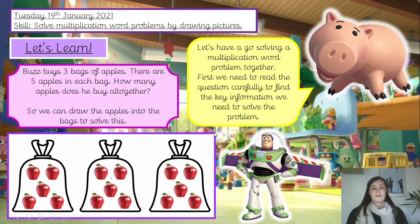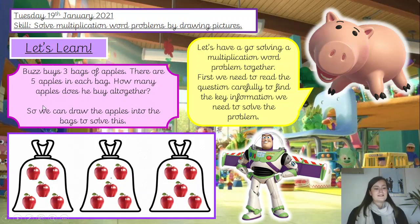The answer is fifteen apples — he's got fifteen apples altogether. Let's double-check: are all of my groups equal? Yes, definitely three bags with five in each one. I know it's correct because I've used my five times table. So that is definitely correct. Now I can move on to my next question. Well done if you got that one.